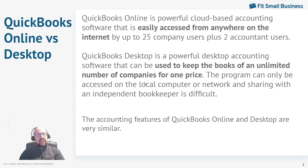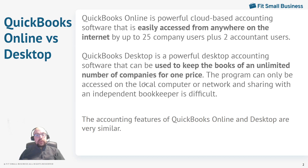First, QuickBooks Online — this is QuickBooks cloud-based accounting software. It's completely online, so you can log into it from anywhere on the internet. Extremely easy to get to, no software to install. QuickBooks Desktop is their traditional accounting software that's been around for many decades — you install it on a computer. A really nice thing about QuickBooks Desktop is you can use it for an unlimited number of companies for one price, whereas QuickBooks Online requires a separate purchase for each company.